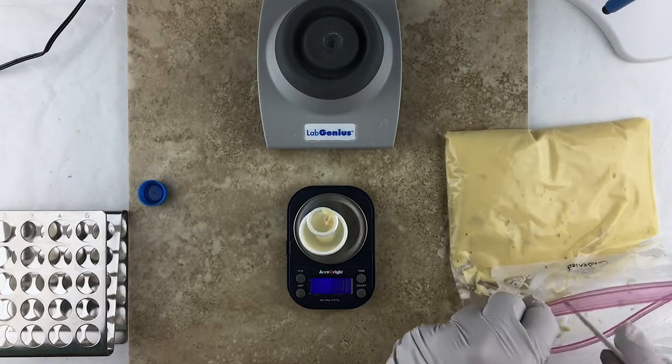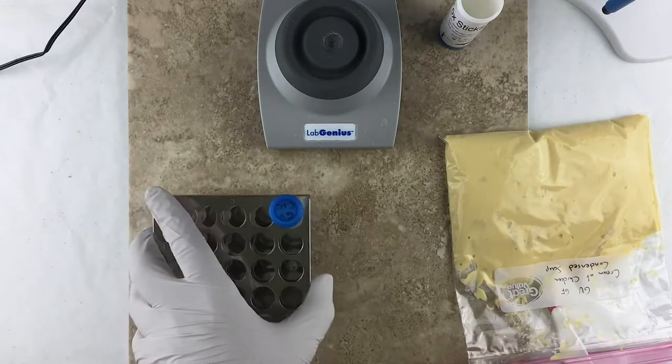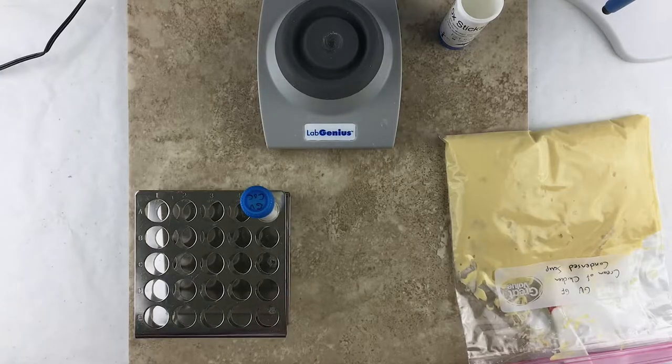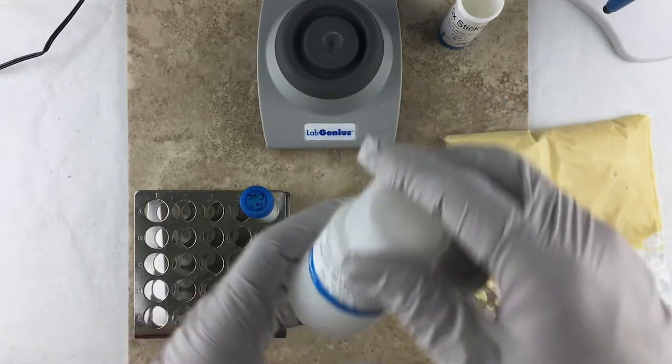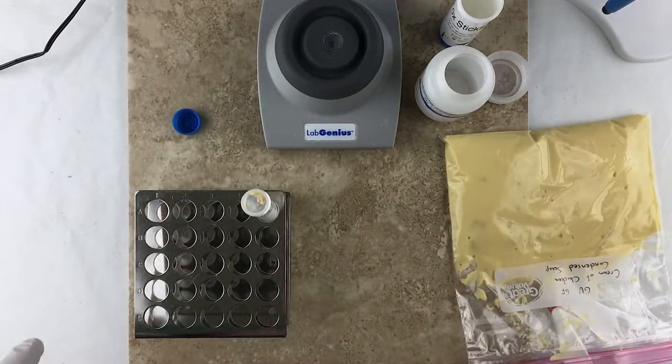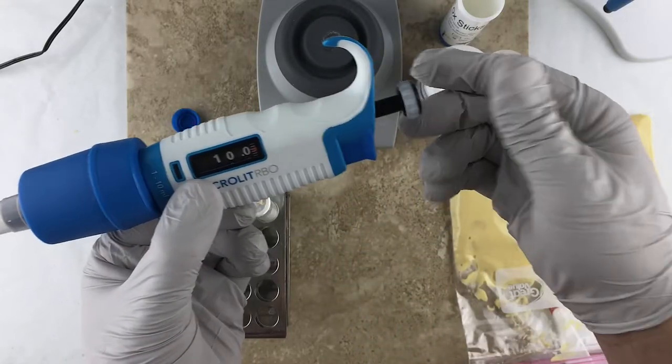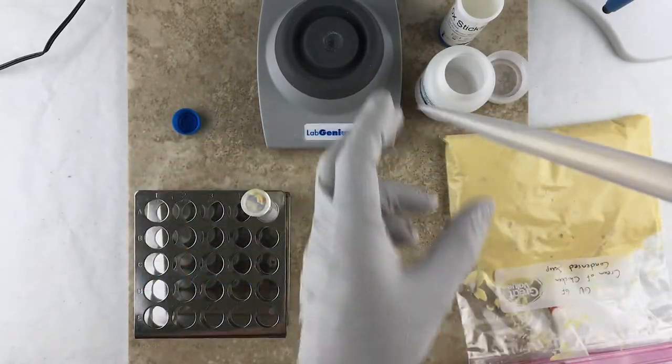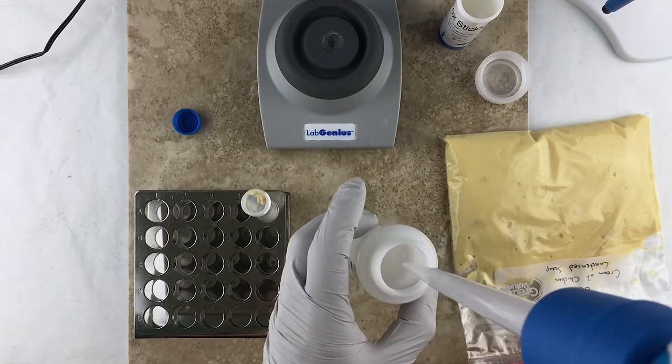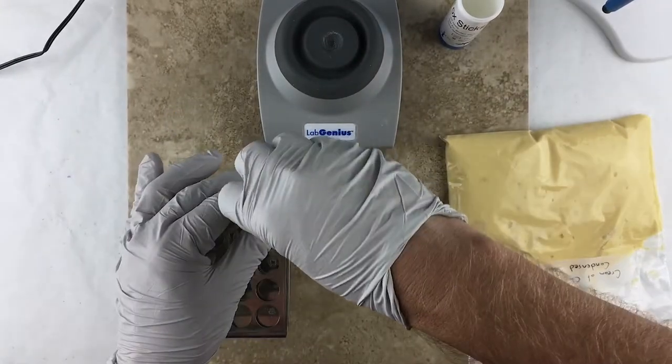Now we'll put one gram of the soup into it. Okay, there's one gram. I'm going to leave it right there. Now the next step is we need to take some extraction solution which we have here and we need to put 10 milliliters of the extraction solution into this vial. So I've got this pipette here set to 10 milliliters.